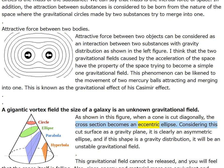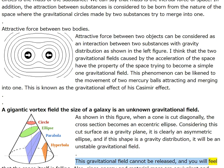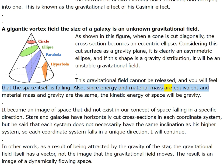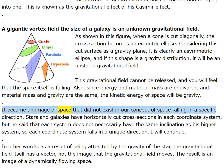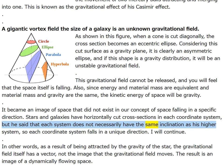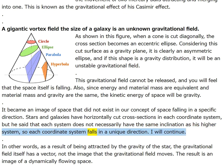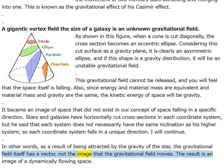When a cone is cut diagonally, the cross-section becomes an eccentric ellipse. Considering this cut surface as a gravity plane, it is clearly an asymmetric ellipse — an unstable gravitational field where you feel the space itself is falling. Since energy and material mass are equivalent, and material mass and gravity are the same, the kinetic energy of space will be gravity. Stars and galaxies have horizontally cut cross-sections in each coordinate system, but each system does not necessarily have the same inclination as its higher system, so each coordinate system falls in a unique direction.